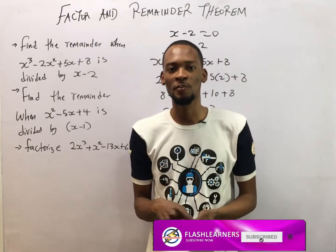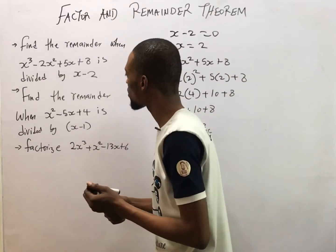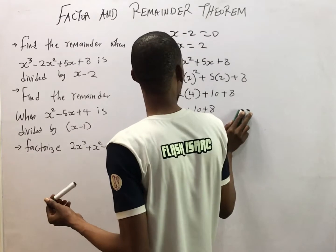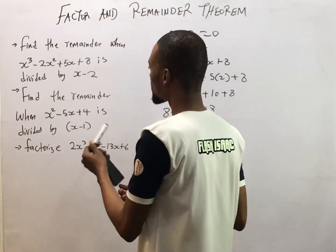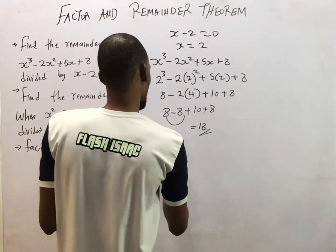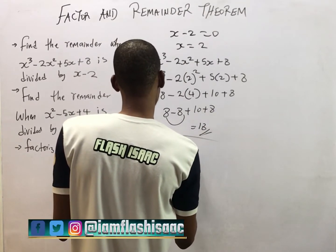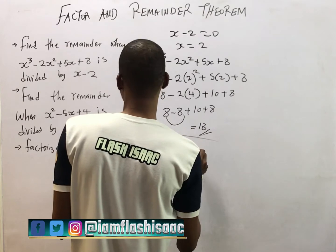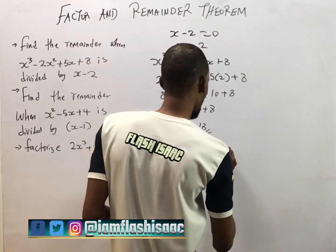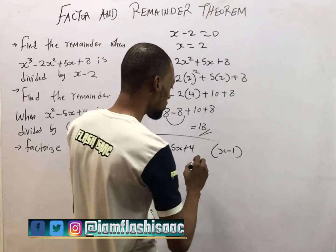That's how you go about that. And take a look at the second one. We will still apply the same knowledge. For the second one, it says S squared minus 5S plus 4. So it's divided by S minus 1. So you simply come and say, let S minus 1 is equal to 0. In that case, S is equal to 1.